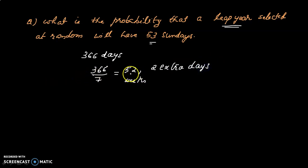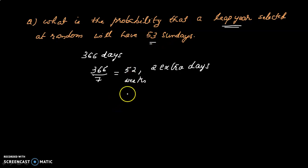A leap year has 366 days, which gives 52 complete weeks, so there are guaranteed 52 Sundays. For there to be 53 Sundays, we need to look at the remaining extra days.